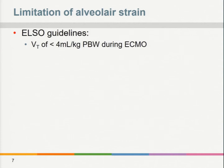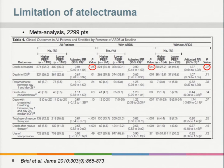ELSO guidelines suggest that tidal volumes must be low — less than 4 mL/kg predicted body weight. However, we must be aware that although patients are on ECMO and using low tidal volumes, this can introduce atelectasis. The challenge is to set the ventilator correctly to limit cyclic opening and closing while also limiting the risk of over-distension.